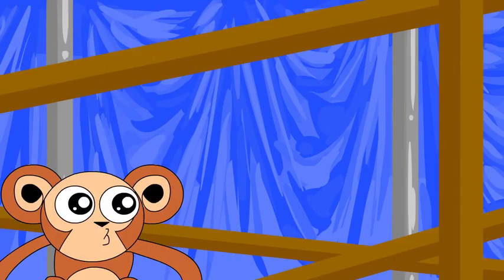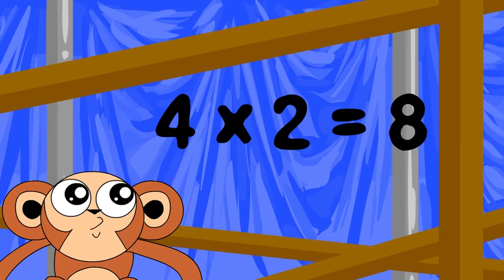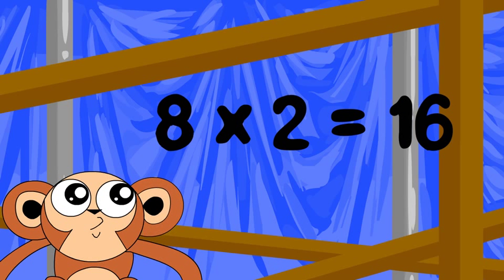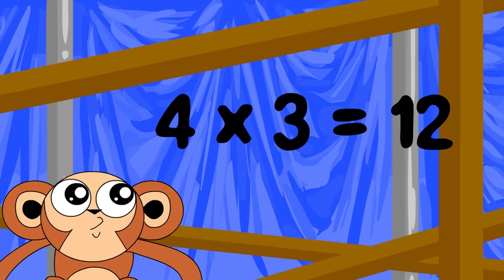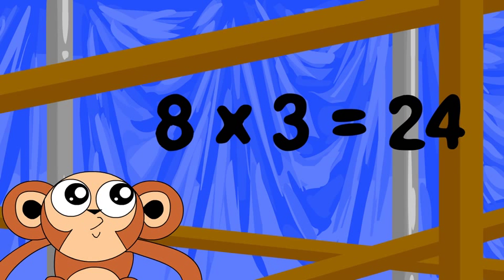Watch this. 4 times 2 is 8. Double 8 is 16. So 8 times 2 is 16. 4 times 3 is 12. Double 12 is 24. So 8 times 3 is 24.